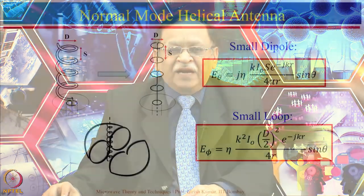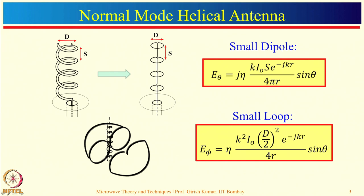Now let us talk about normal mode helical antenna. Here the diameter of the helix and spacing S between each turn are the same parameters as before. The only difference is that the circumference pi*d must be much smaller than wavelength. Under this condition, the normal mode helical antenna can be approximated as alternating straight wire segments and small loop antennas — one component corresponds to a monopole antenna and the other consists of multiple N-turn loop antennas.